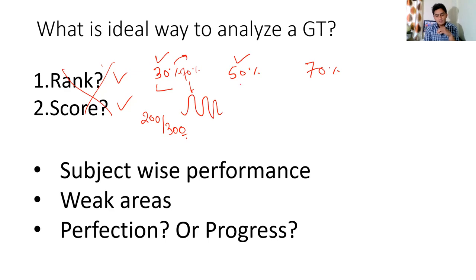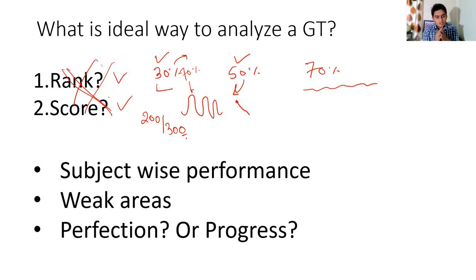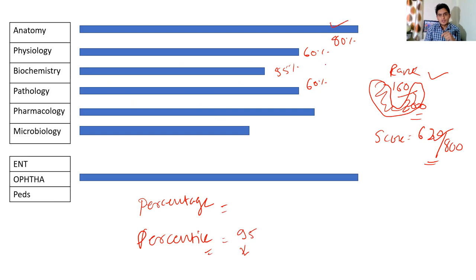If most questions come from the part you've read, your performance will be good, but if most questions come from the other part, performance will dip. However, if you have covered 70% of the portion well, you will have a steady graph with not much fluctuation and a good ranking score. That is why being keen only on rank and score means our GT rank does not reciprocate in the final exam. Do not go for rank and score - look for subject-wise performance first.